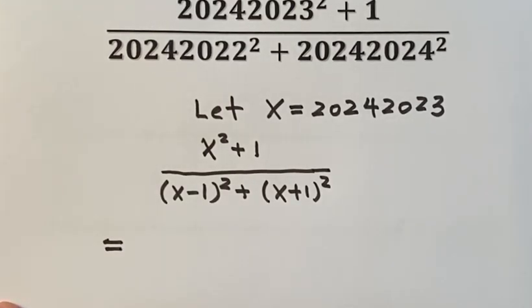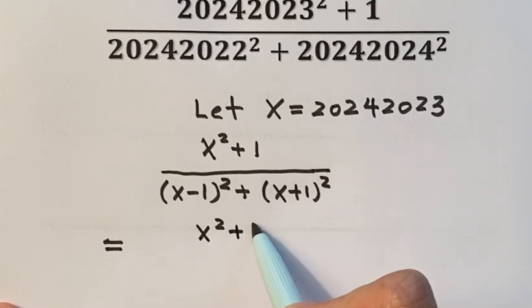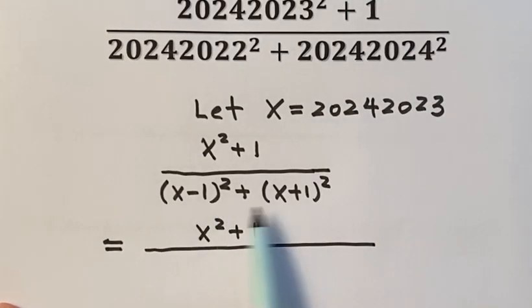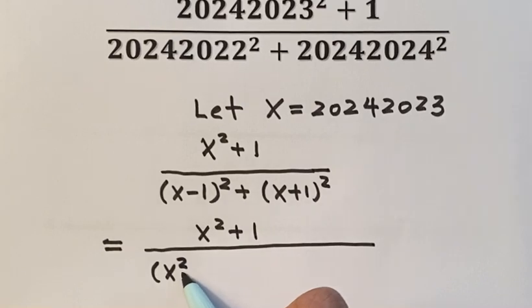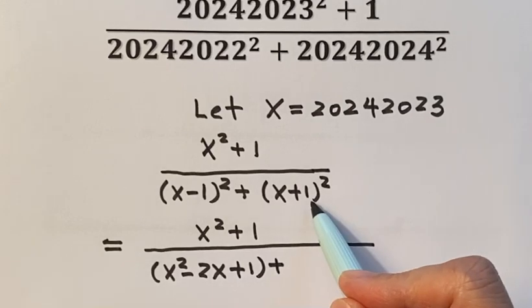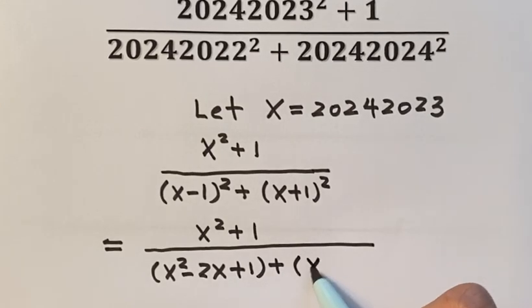Because the numerator cannot be simplified, let's just copy the numerator: x squared plus 1. Let's expand the denominator. So we have x squared minus 2x plus 1, and then expand this one: x squared plus 2x plus 1.